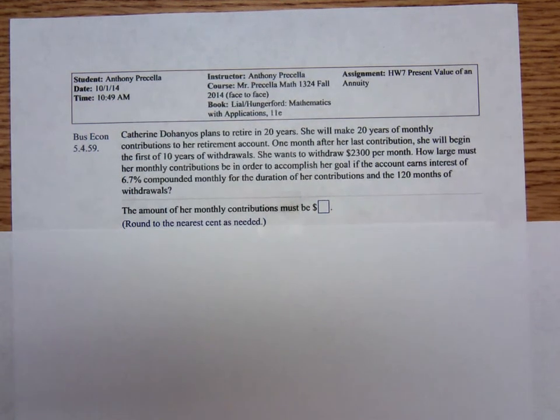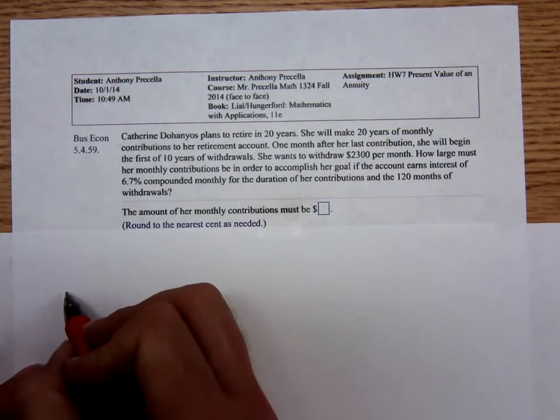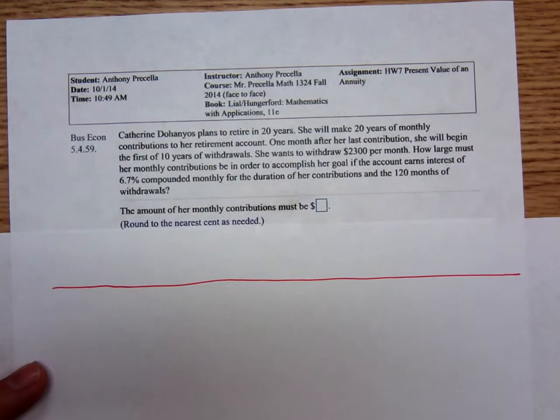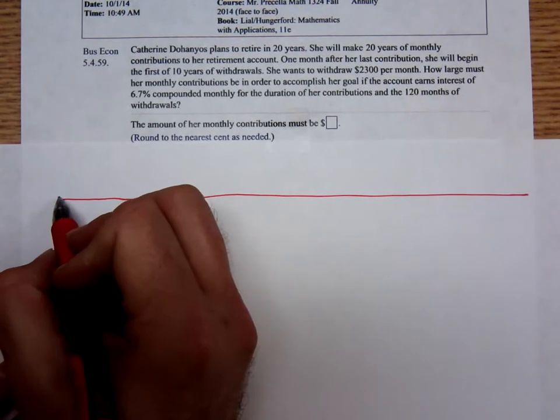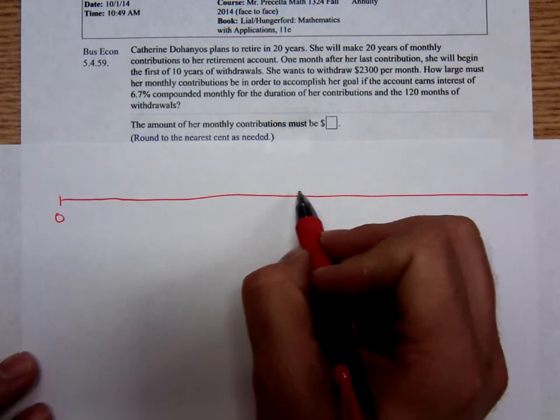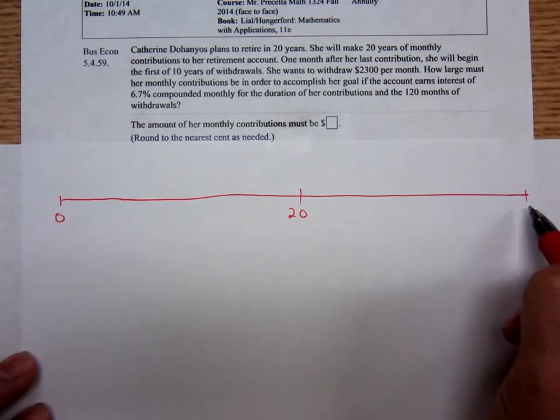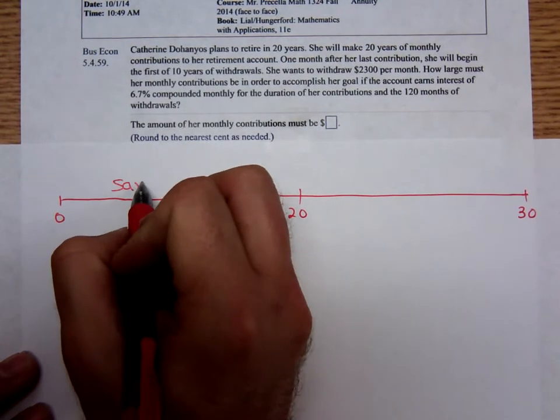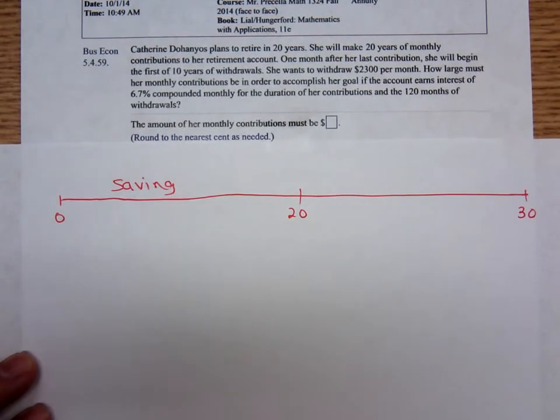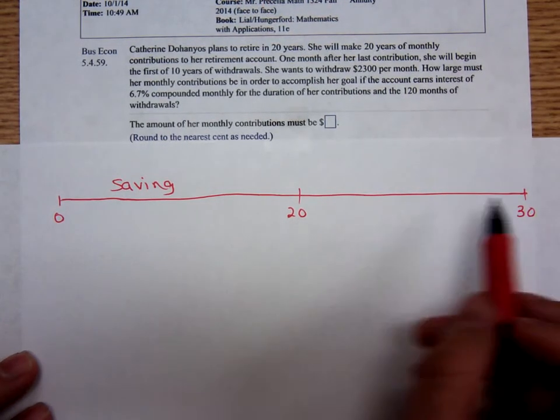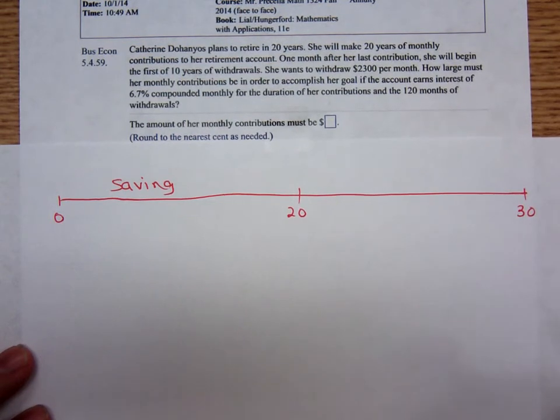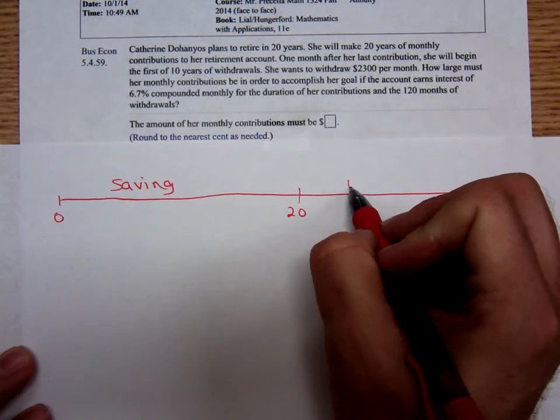So over the 30 year lifespan of this account, 20 years she's going to be saving and then 10 years she's going to be withdrawing the money. Here's the saving portion of the timeline and after 20 years, the last 10 more years, she takes the money out. So that's a total of 30 years. That's where I'm getting the 30 year lifetime span. Here's where she's withdrawing.